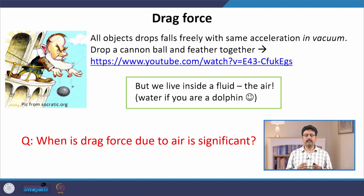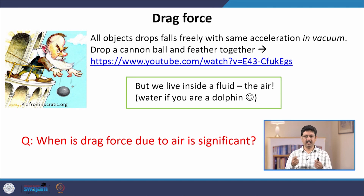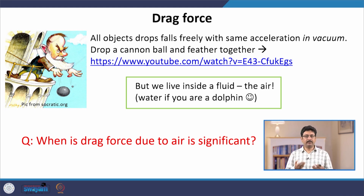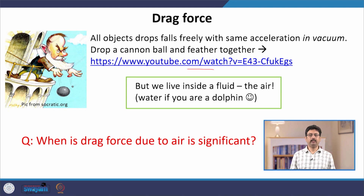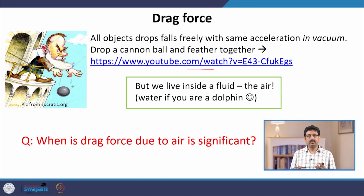We know that the acceleration due to gravity for both of them is the same, small g, so they should be falling together. In fact, this will be true if we perform the experiment of dropping a feather and a cannonball together in vacuum. I provide a link to a very interesting and fascinating video that actually does this experiment in a vacuum chamber and dramatically shows that indeed they fall together. I invite you to take a look at this video.